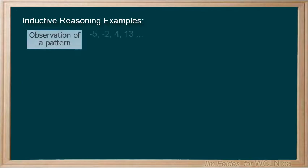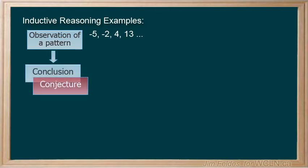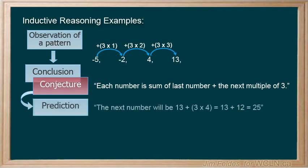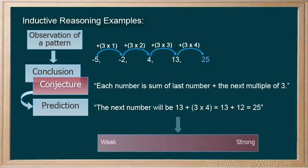Sometimes the patterns are less obvious or certain. Pause the video and see if you can make a conjecture about this pattern and predict the next value. With some careful observation, we see that each number is increasing by a multiple of 3. Add 3 times 1, then 3 times 2, 3 times 3. So our conjecture is that each number is the sum of the last number, plus the next multiple of 3. Our prediction, therefore, is that the next number will be the sum of 13 plus 3 times 4, which is 13 plus 12 equals 25. Again, this pattern seems to be fairly clear, so our conjecture is relatively strong.